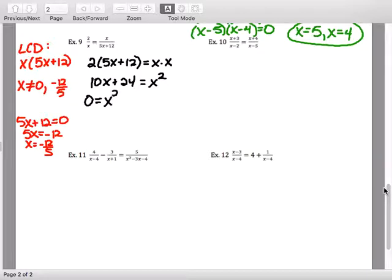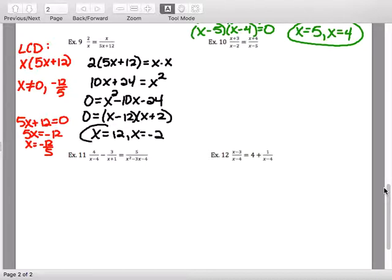This is quadratic. Quadratic is when you have an X squared. So now I'm trying to think of two numbers that multiply to negative 24 but add to negative 10. So one of them is positive and one of them is negative. So 6 and 4 aren't going to work. So how about X minus 12, X plus 2. So I get X is 12, X is negative 2. Check it against my restrictions and those two are okay.